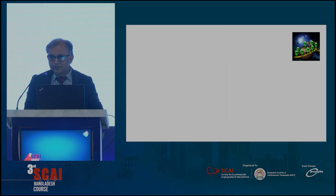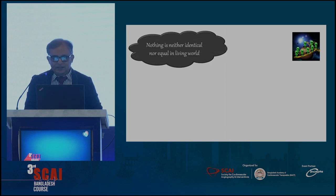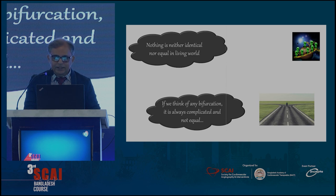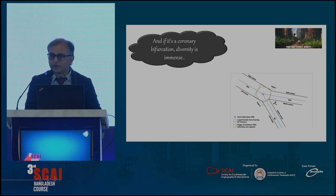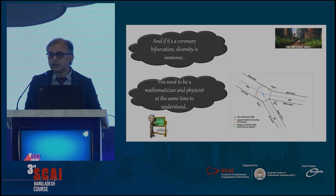My topic is a little bit different but yesterday's lecture is almost identical to what I have given. Nothing is identical or equal in the living world — and if we think of any bifurcation, it is always complicated and not equal. As you can see in this picture, it's a bifurcation arc, and there is so much complexity. The physics and mathematics here are immense.